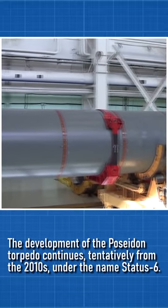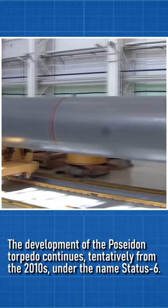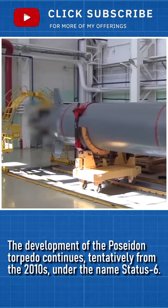The development of the Poseidon torpedo continues, tentatively from the 2010s, under the name Status-6.